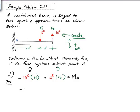So if we do the math, we get minus 100 kip feet plus 150 kip feet equals the moment about point A.